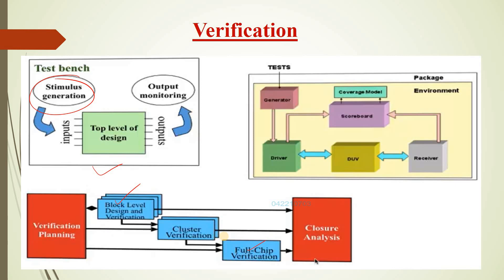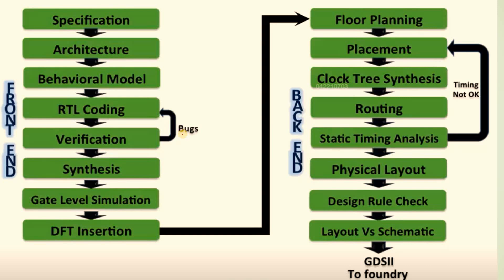Sometimes we follow the UVM — Universal Verification Methodology — to verify the design. The scoreboard is one verification component that contains checkers and verifies the functionality of the design. If any bugs are found during verification, we go back to RTL coding and make modifications, then verify again. It is an iterative process.